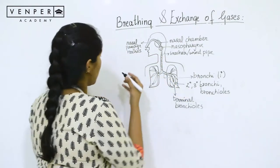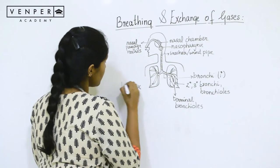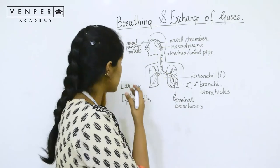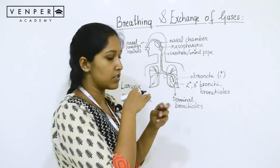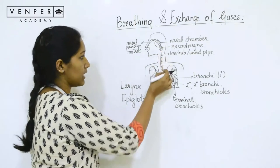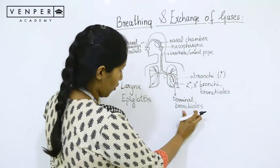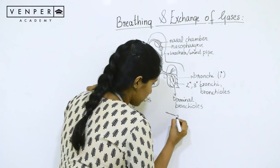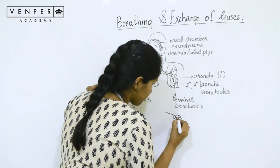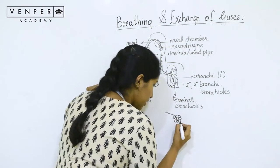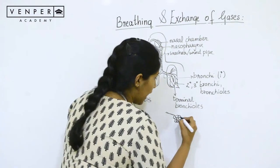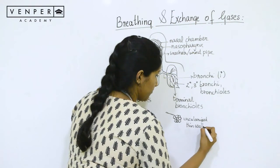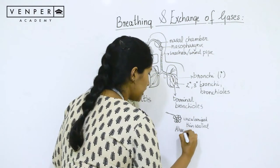There is another structure called the epiglottis — a cartilaginous flap that prevents the entry of food into the windpipe, directing it into the esophagus instead. After the terminal bronchioles, you have thin-walled sac-like structures at the end. These are single-cell-thick, vascularized structures called air sacs or alveoli.